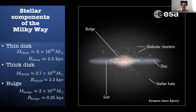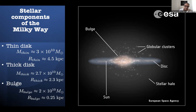The thin disk has a mass of 3×10^10 solar masses. The thick disk is about the same, and the bulge is a bit smaller. The bulge is very compact and affects only the very central part, while the thin and thick disk extend to larger distances. The characteristic scale of the exponential decay is 4.5 kiloparsecs for the thin disk and 2.3 for the thick disk.